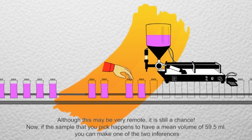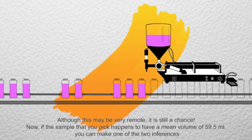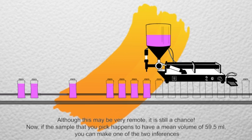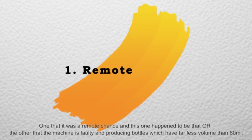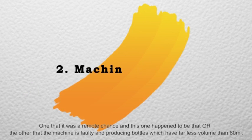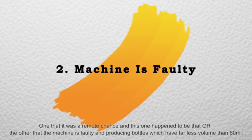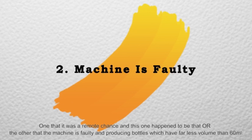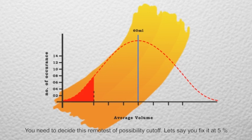Now, if the sample that you pick happens to have a mean volume of 59.5 ml, you can make one of the two inferences. One, that it was a remote chance and this one happened to be that. Or the other, that the machine is faulty and producing bottles which have far less volume than 60 ml.